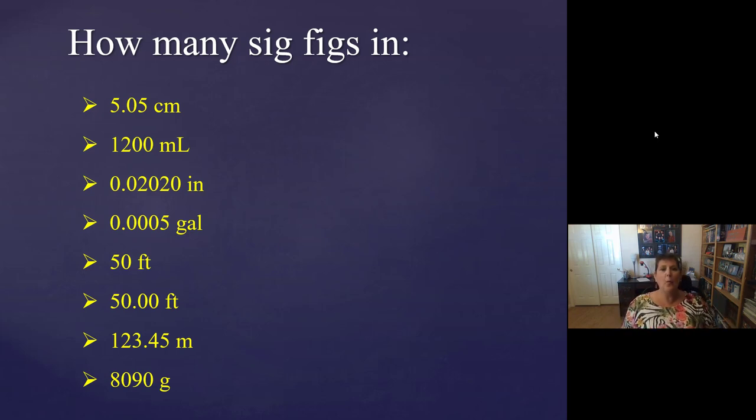All right, here's an easy one. One, two, three, point four, five. Yeah, all five. All five count, five sig figs. Last one, 8,090 grams. Three sig figs, I hope you said. The eight and the nine count. The zero in between them is in between, so it counts. Zero at the end doesn't have a decimal, so it doesn't count. It's a placeholder. Here's your answers. Good job, GCC. We're going to come back and do some more problems in the next video. Hope you're having a good time. Thank you.